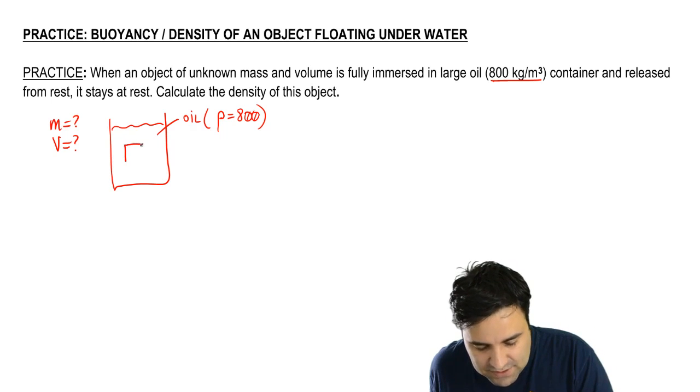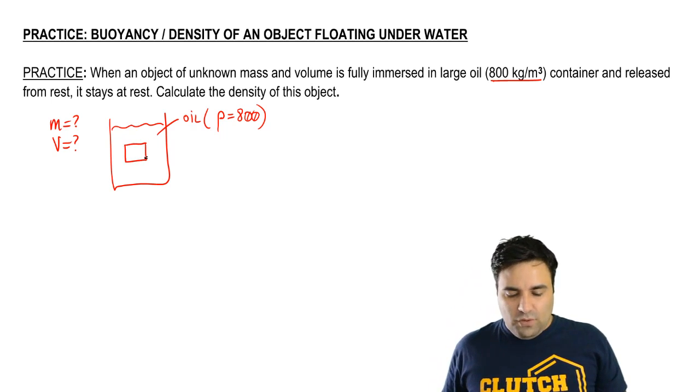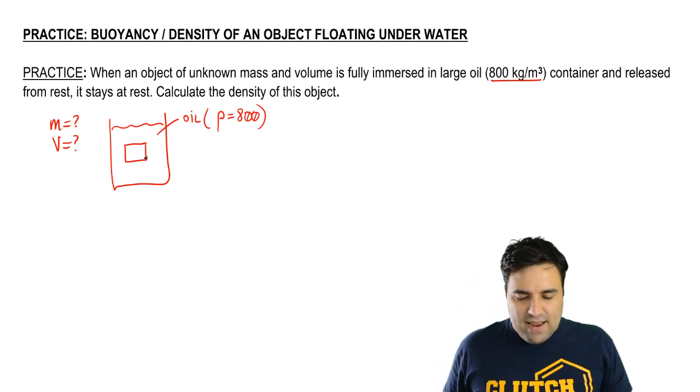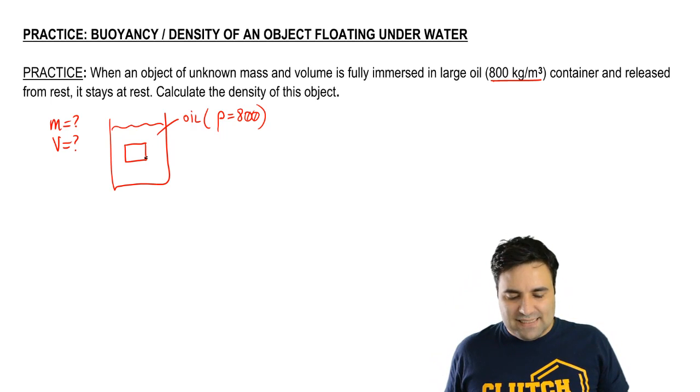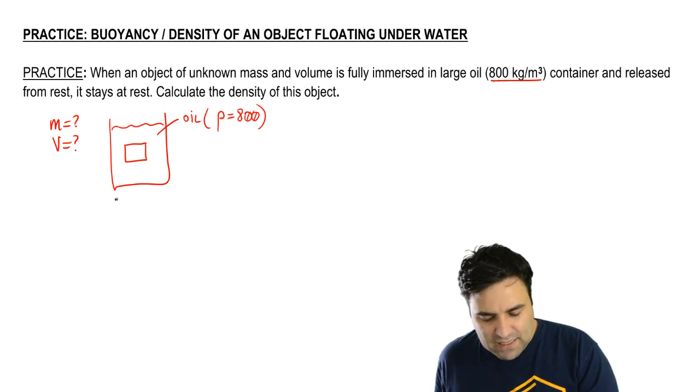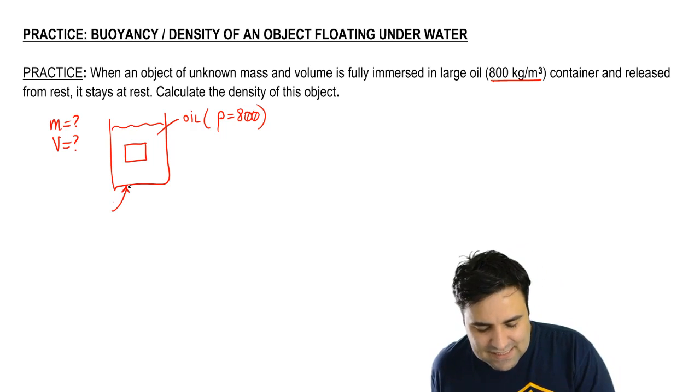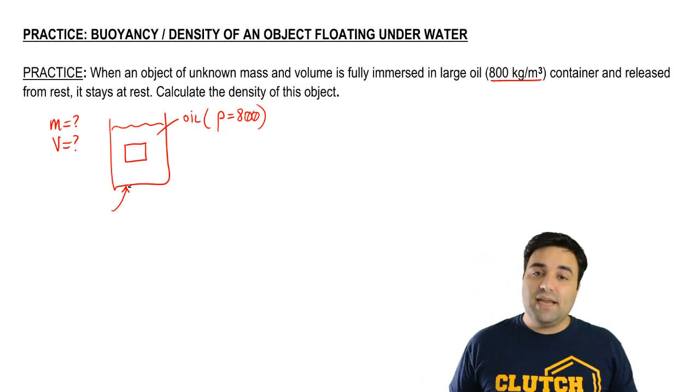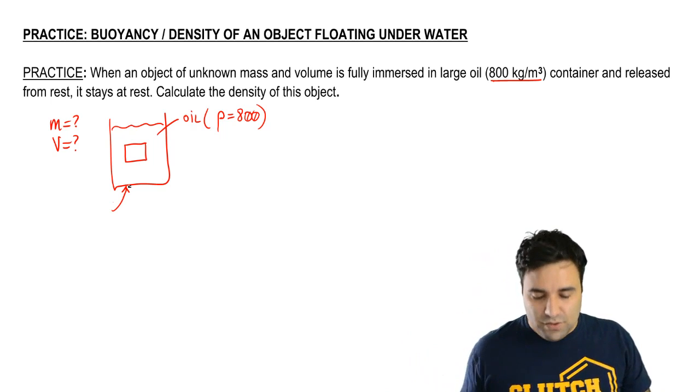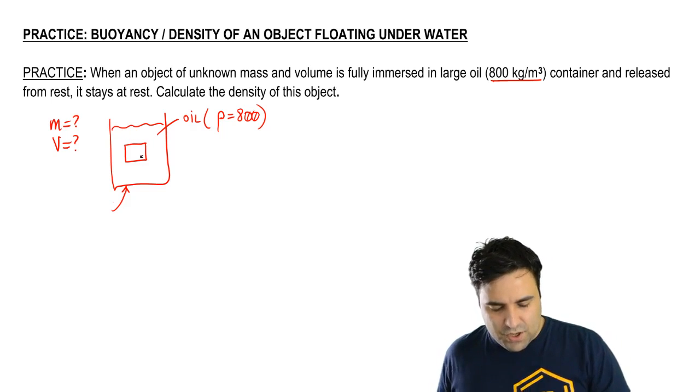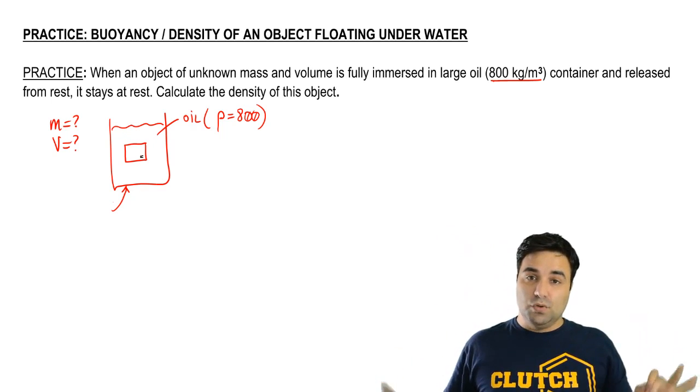So something like this, the object is here somewhere fully submerged. And then when you release it from rest, it stays at rest. To be clear, it does not mean that the object is sitting at the bottom. If it was sitting at the bottom, they would have to explicitly tell you that it's sitting at the bottom. So we're just going to say that you leave it somewhere here, you release and it doesn't move.